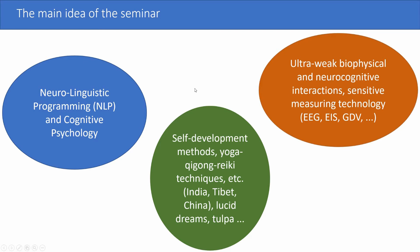We have three areas related to human consciousness. The first one considers it from the psychology side — for instance, neuro-linguistic programming, cognitive psychology, and similar areas. The second one deals with ultra-weak biophysical interactions, neurocognitive research, and corresponding sensitive measurement technologies like EEG, different forms of spectroscopy, the Kirlian effect, and similar.